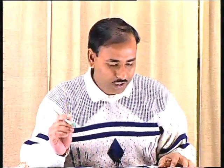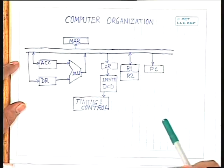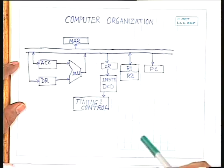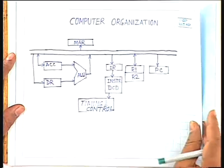We have started discussion on designing a simple CPU. The CPU architecture we have considered has only two registers R1 and R2, in addition to an accumulator and data register. It also has an ALU, program counter, instruction register, instruction decoder, timing and control unit, and a memory address register. For designing this CPU, we have considered a few instructions around which the CPU will be designed.